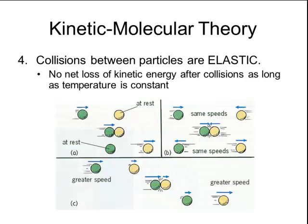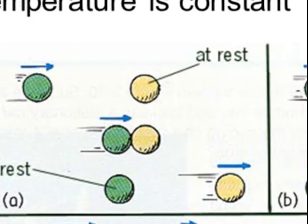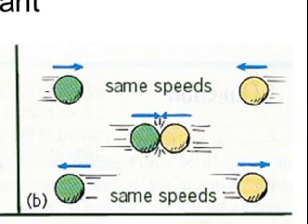The diagram at the bottom of the page shows a couple of examples. In the box labeled A, the yellow particle is at rest and the green particle is moving towards it. They collide, and after the collision the green ball is at rest and the yellow one is moving at the same speed the green one was moving initially — so all of the kinetic energy was transferred from the green ball to the yellow one. In the box labeled B, two particles are moving towards each other at the same speed, then they collide and move away from each other at the same speed, so the total kinetic energy before the collision equals the kinetic energy afterwards.